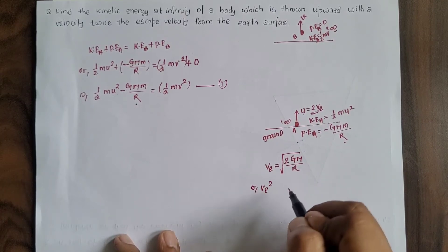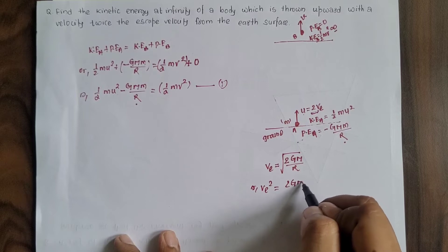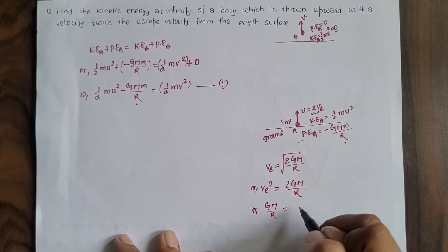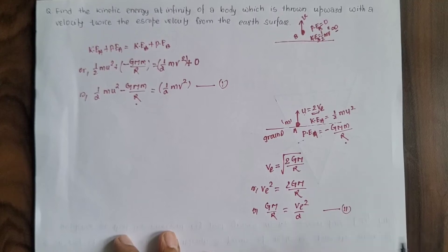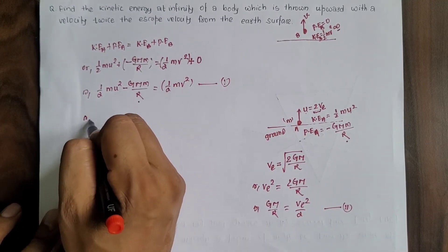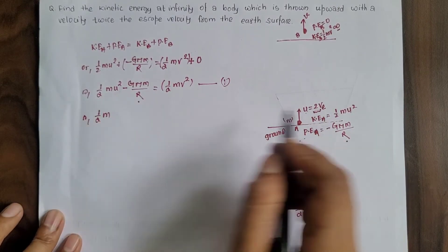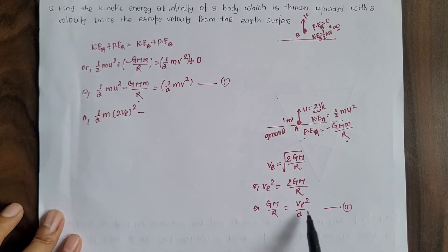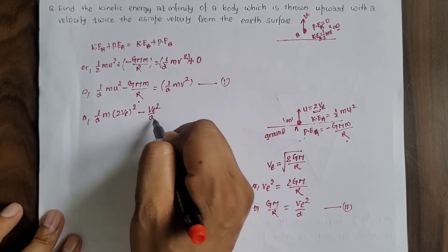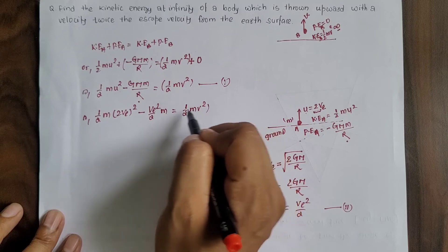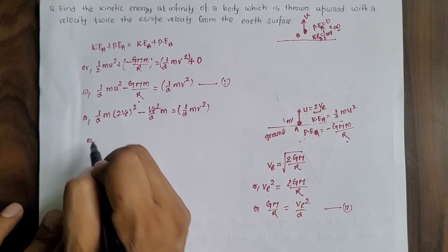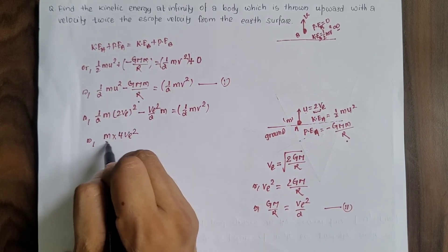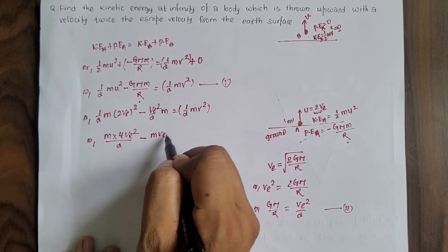From ve = √(2GM/r), squaring both sides: ve² = 2GM/r, therefore GM/r = ve²/2. Now substituting into the equation: the initial velocity u = 2ve, so ½m(2ve)² - m(ve²/2) = kinetic energy at infinity. This gives: ½m(4ve²) - mve²/2 = KE at infinity.